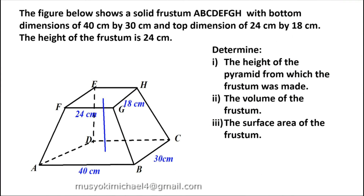So in this question it says that the figure below shows a solid frustum ABCDEFGH. This is a frustum with bottom dimensions of 40 cm and 30 cm, and top dimensions of 24 cm by 18 cm. The height of the frustum is 24 cm. The question wants us to find the height of the pyramid from which the frustum was made, then the volume of the frustum, and finally the surface area of the frustum.